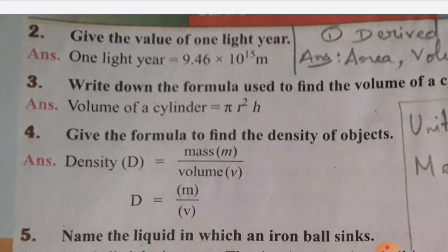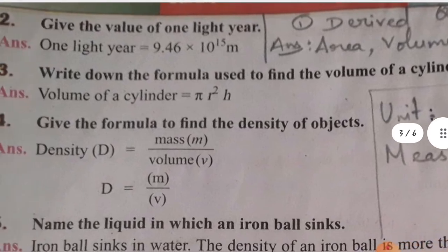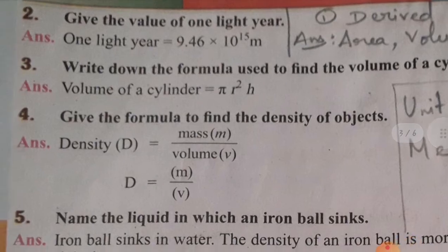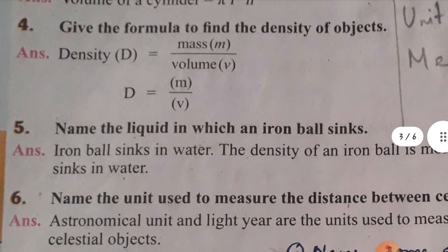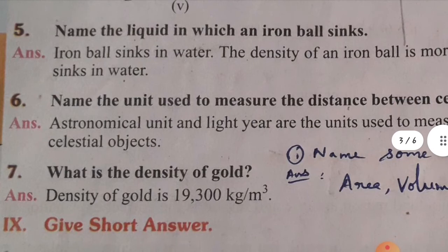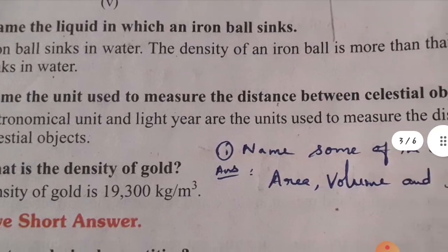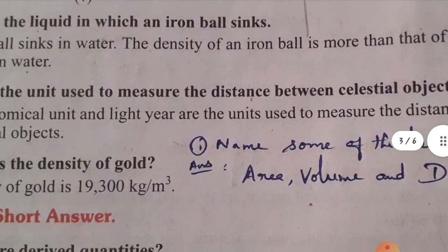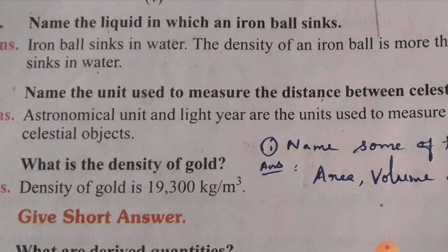Third: write down the formula used to find the volume of a cylinder. Volume of cylinder = π r² h. Fourth: give the formula to find the density of objects. Density D = mass divided by volume, that is D = m/v. Fifth: name the liquid in which iron balls sink. Iron balls sink in water because the density of an iron ball is more than that of water.